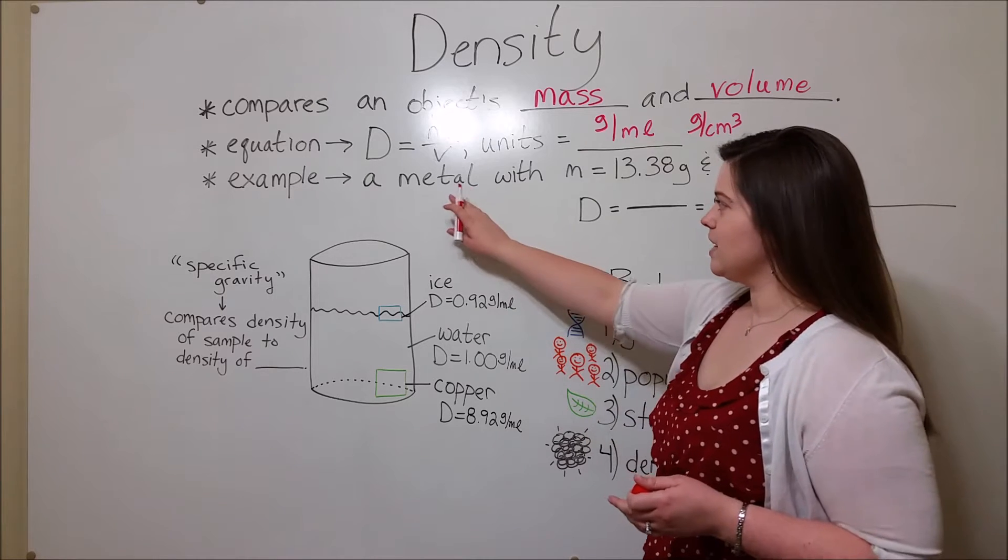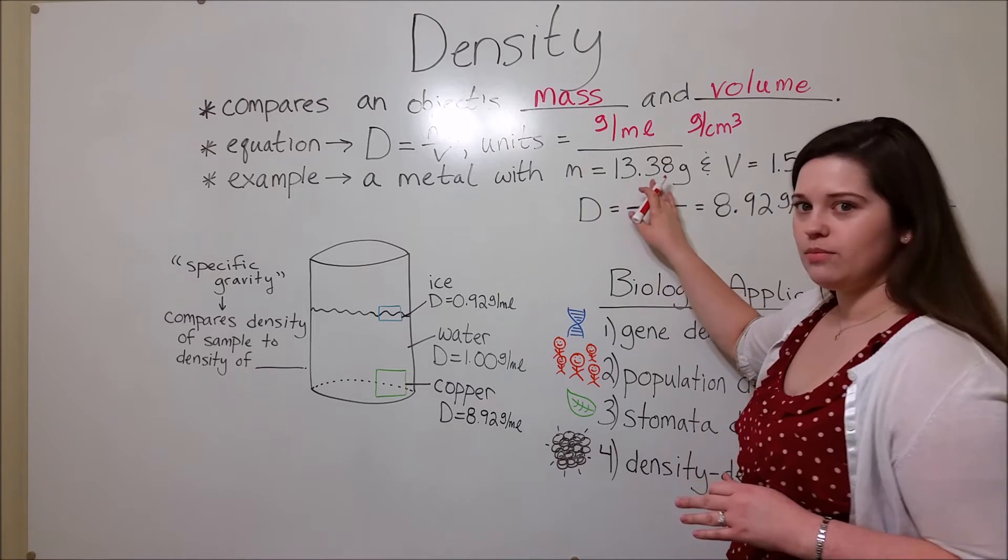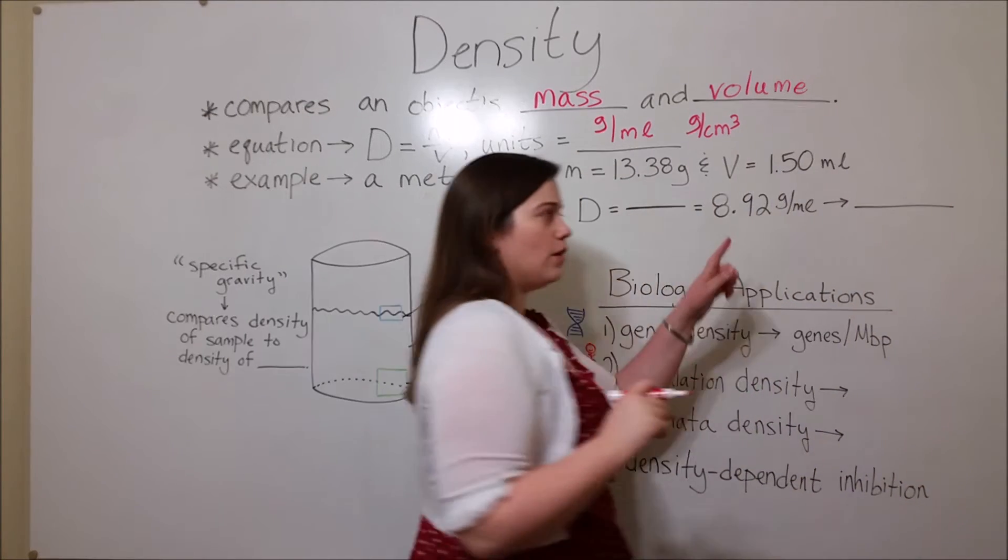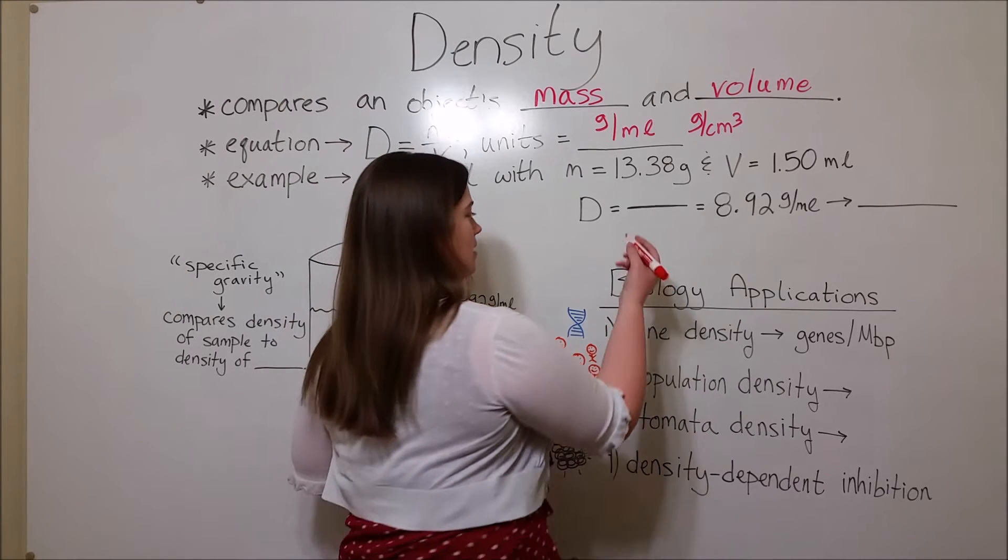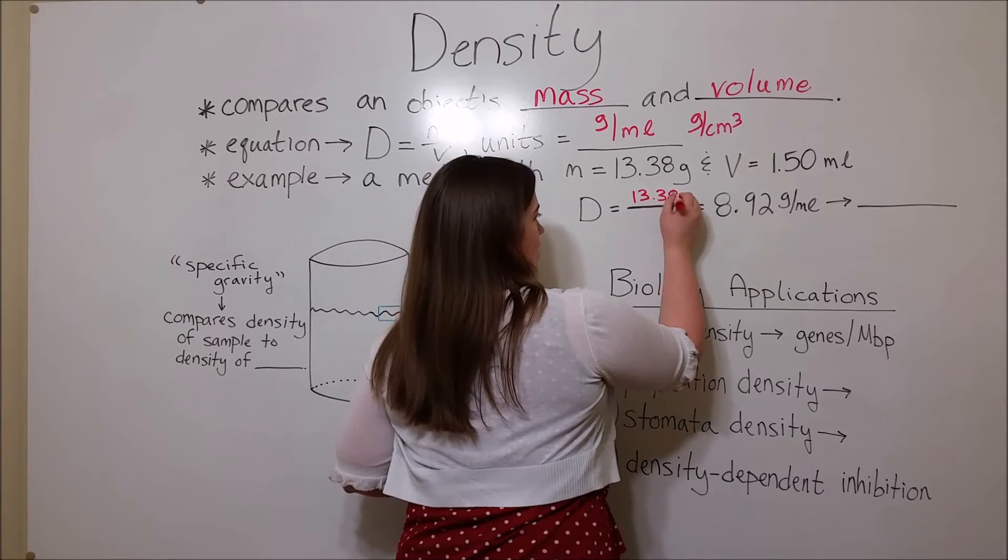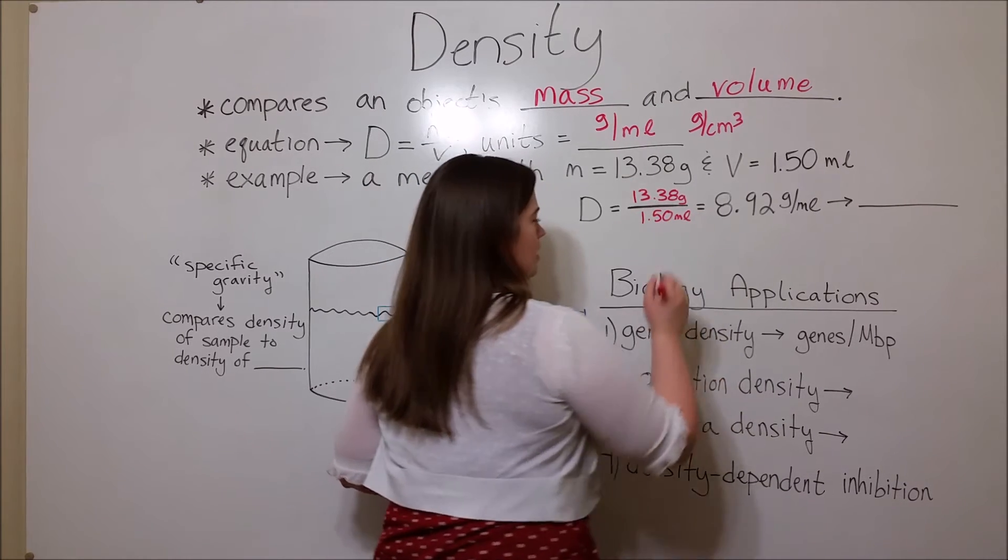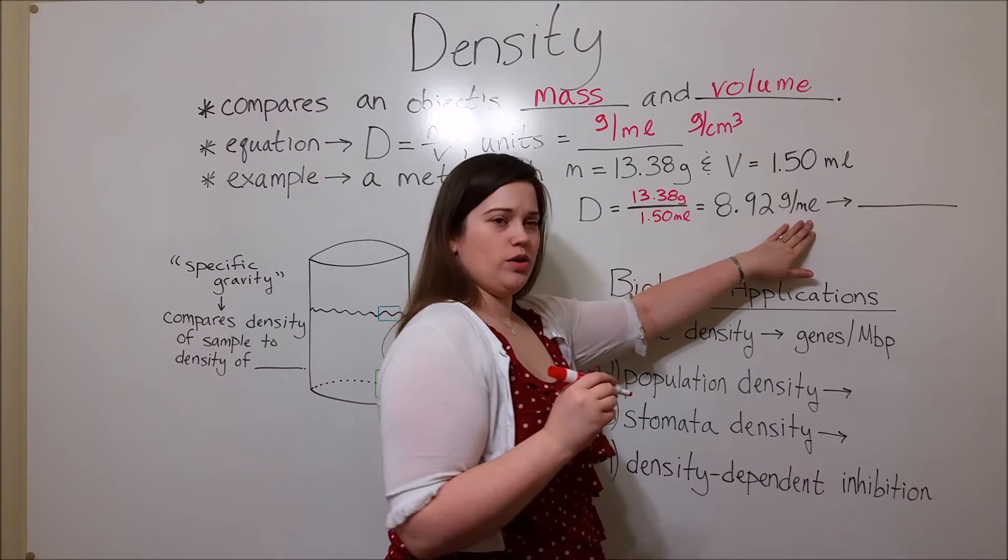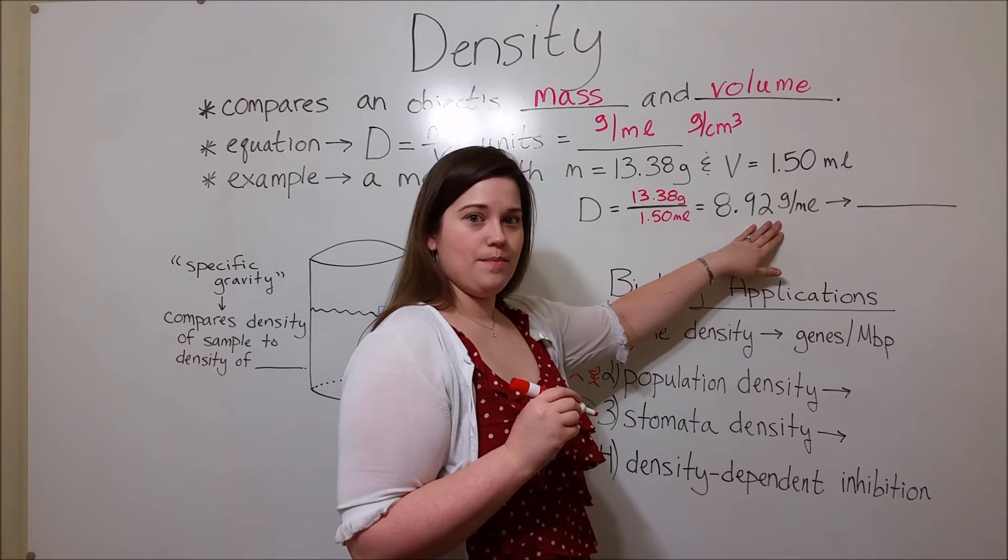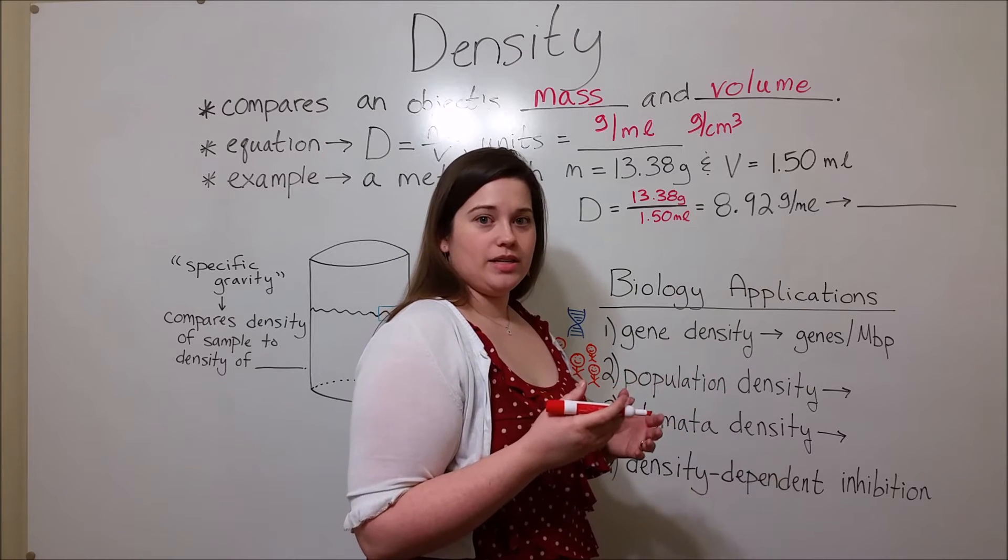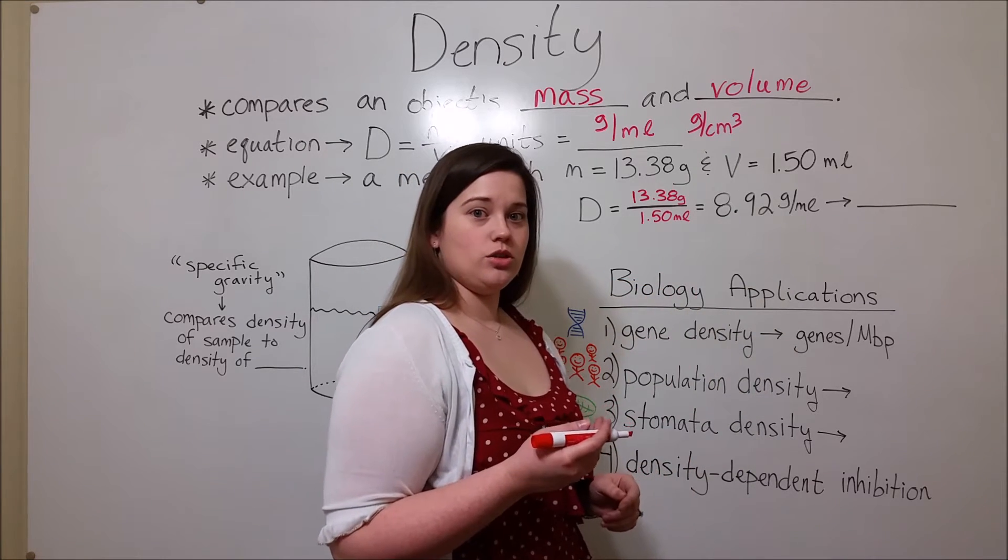Let's look at an example. Let's say that you have a metal. You're not sure exactly what kind, but it has a mass of 13.38 grams and a volume of 1.5 milliliters. We can now solve for the density: that is the mass, 13.38 grams, divided by the volume, 1.50 milliliters. If you do this math, it works out to 8.92 grams per milliliter. You can actually use the density now to identify the metal, because all objects have a characteristic density at a given temperature. In this case, 8.92 grams per milliliter corresponds to copper.